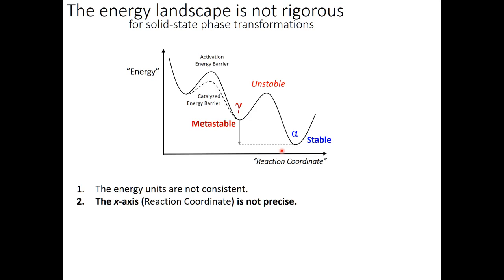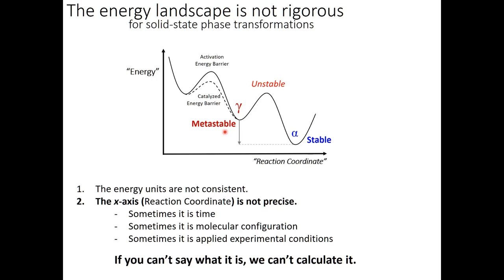The second major problem of the energy landscape picture is that the x-axis is not precise. What is the reaction coordinate? If you ask different scientists, they'll tell you different things—sometimes it's time, in the catalysis community it represents molecular configurations, and some describe it as temperature or pressure. Because it's such an imprecise definition, as a computational material scientist I cannot reliably calculate it. Both the energies and the x-axis are not a good starting point for predictive material synthesis or describing non-equilibrium intermediates.